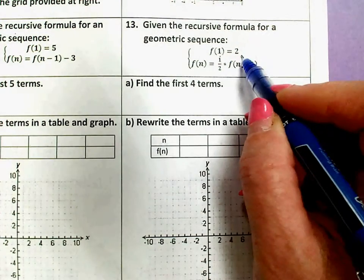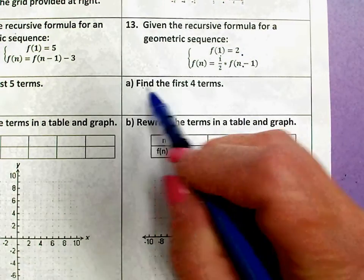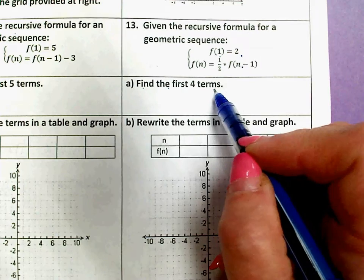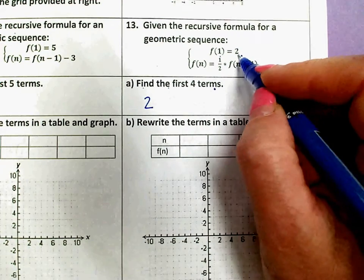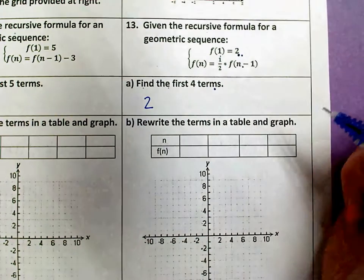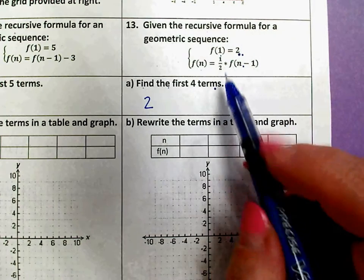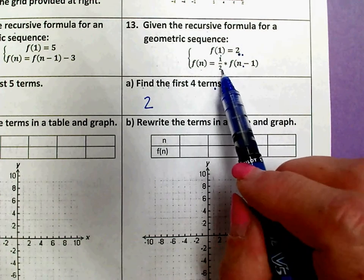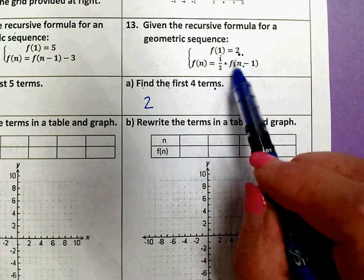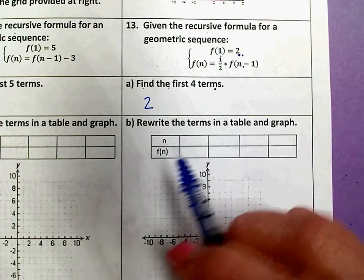My first term is 2, so on part A when it asks me to find the first four terms, I already know my first term is 2 because that's a given, that's what f of 1 means. This is the pattern of what's happening to it, and it says that it's taking the last term I knew and cutting it in half, multiplying it by 1 half.